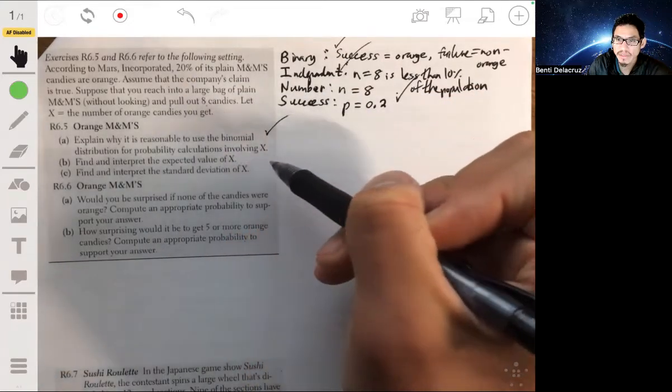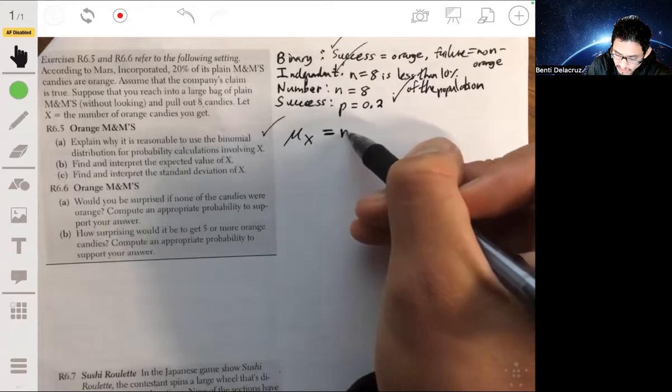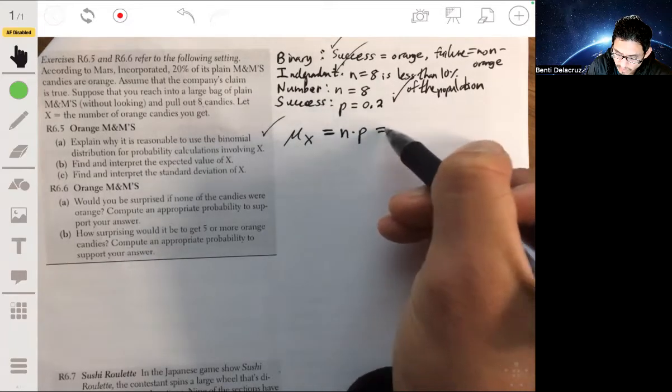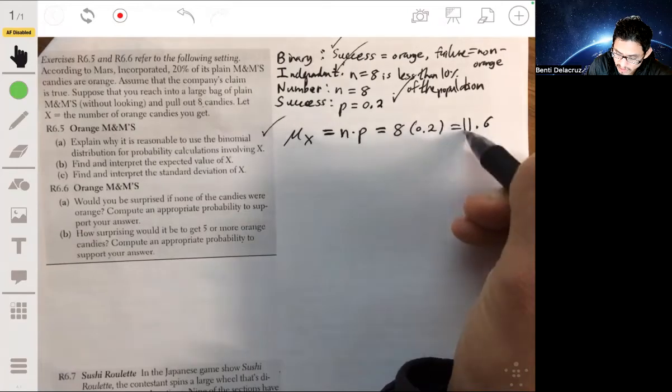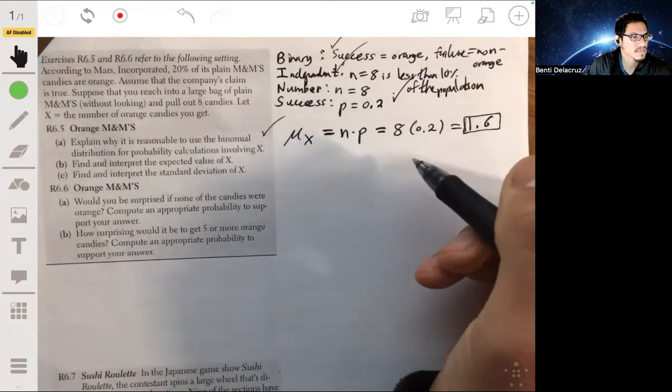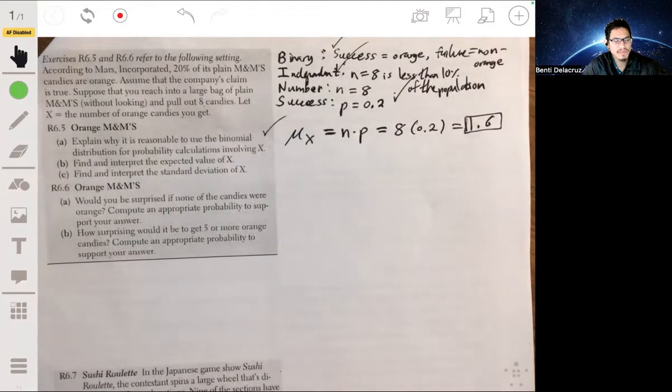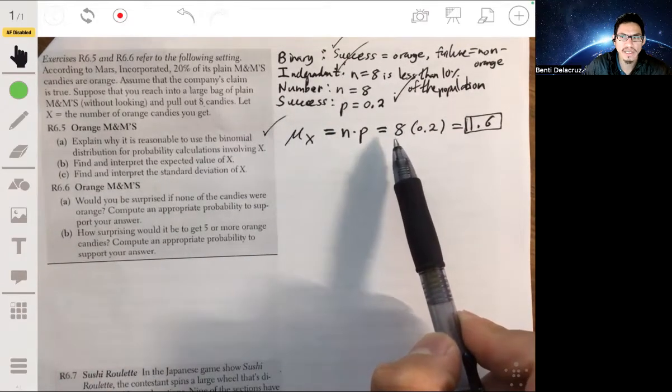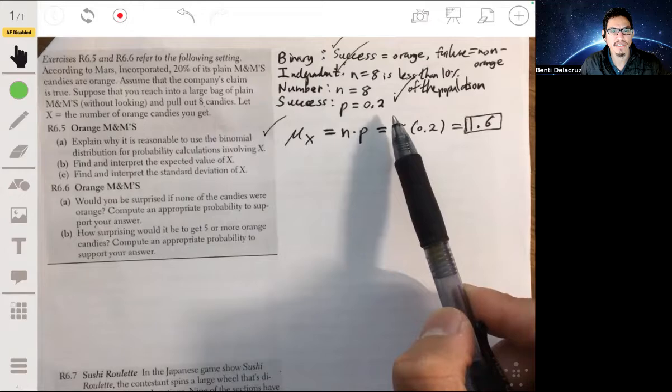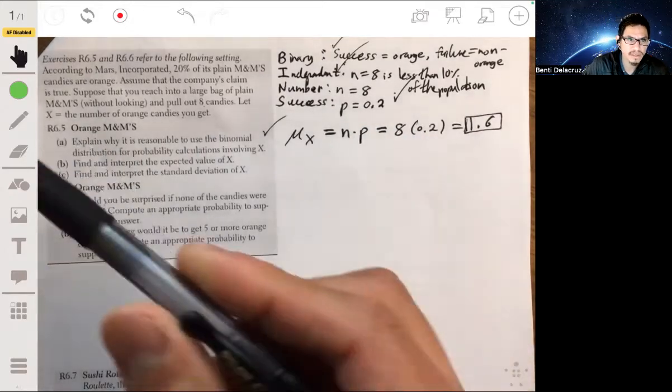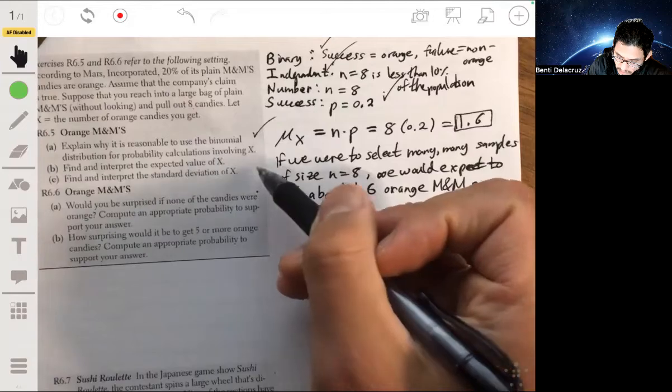Find and interpret the expected value of X. The expected value of X is another way of saying find the mean of X. You're given a formula, which is N times P. In this case, N is 8, P is 0.2. So the mean of X, or the expected value of X, is 1.6. What does that 1.6 mean? It's basically saying that this is the average amount of orange candies you would get when you draw eight. If we were to select many, many samples of size eight, on average you would get 1.6 orange candies.